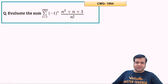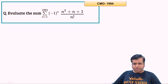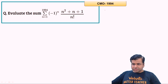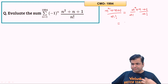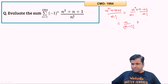This is again a question of telescoping sum. The question says: find the sum from n = 1 to 1994 of (−1)^n × (n² + n + 1)/n!. First let's rewrite (n² + n + 1)/n!. We can break it into two terms: (n² + n)/n! + 1/n!, which simplifies to n/(n−1)! + (n+1)/n!.